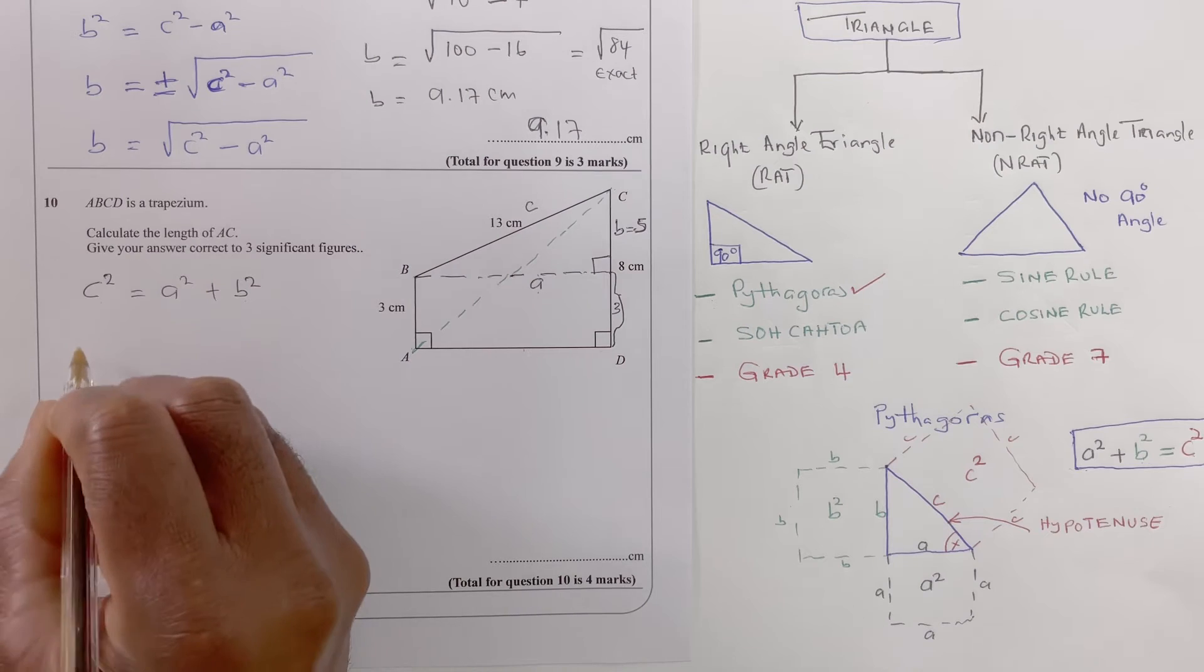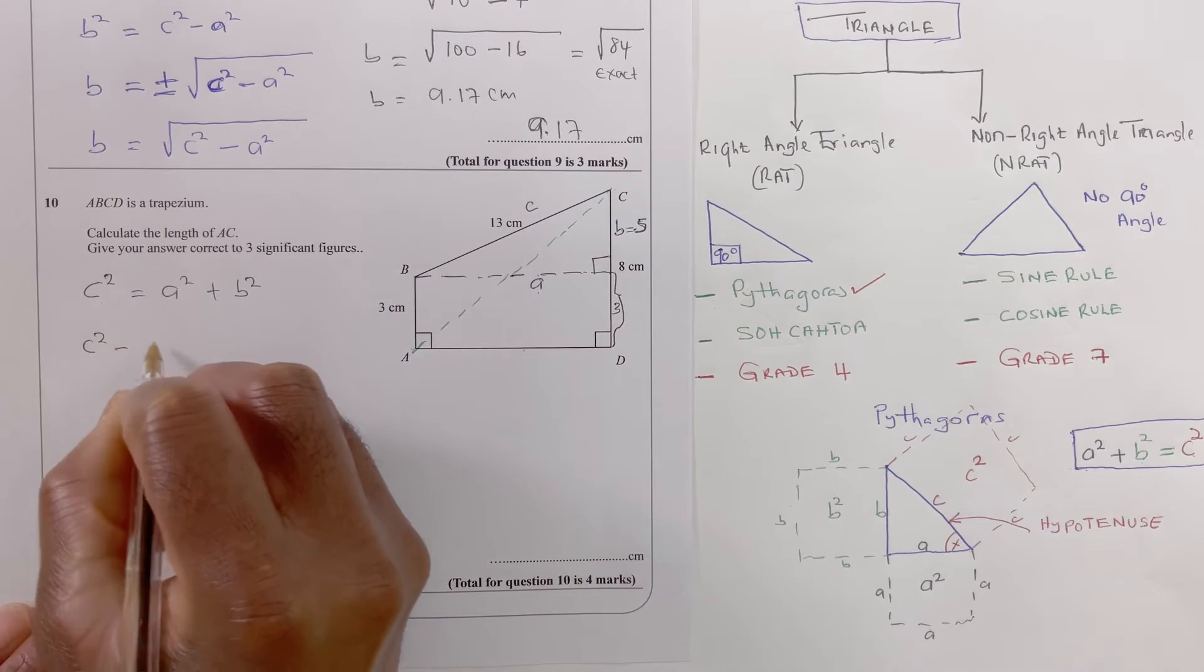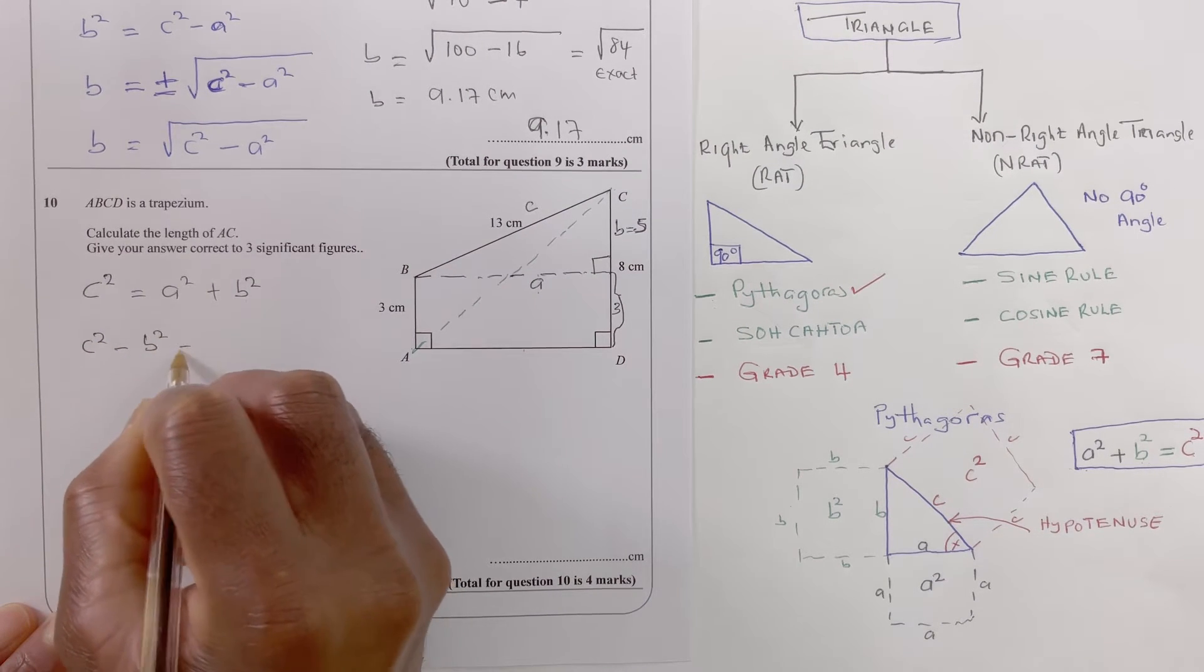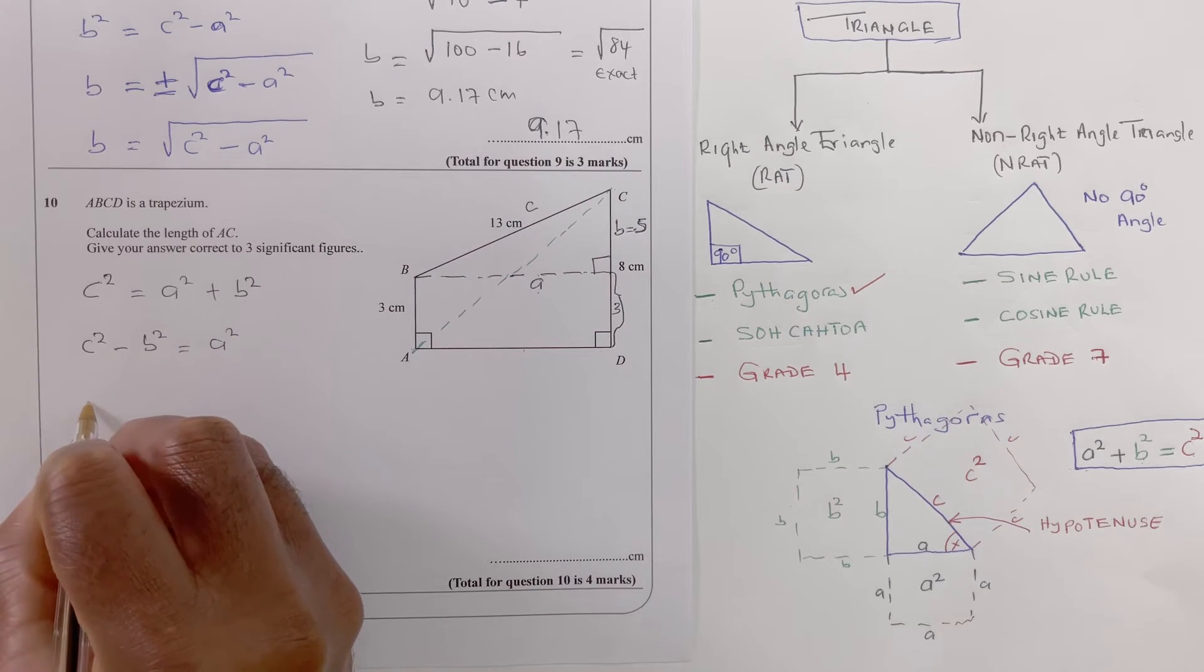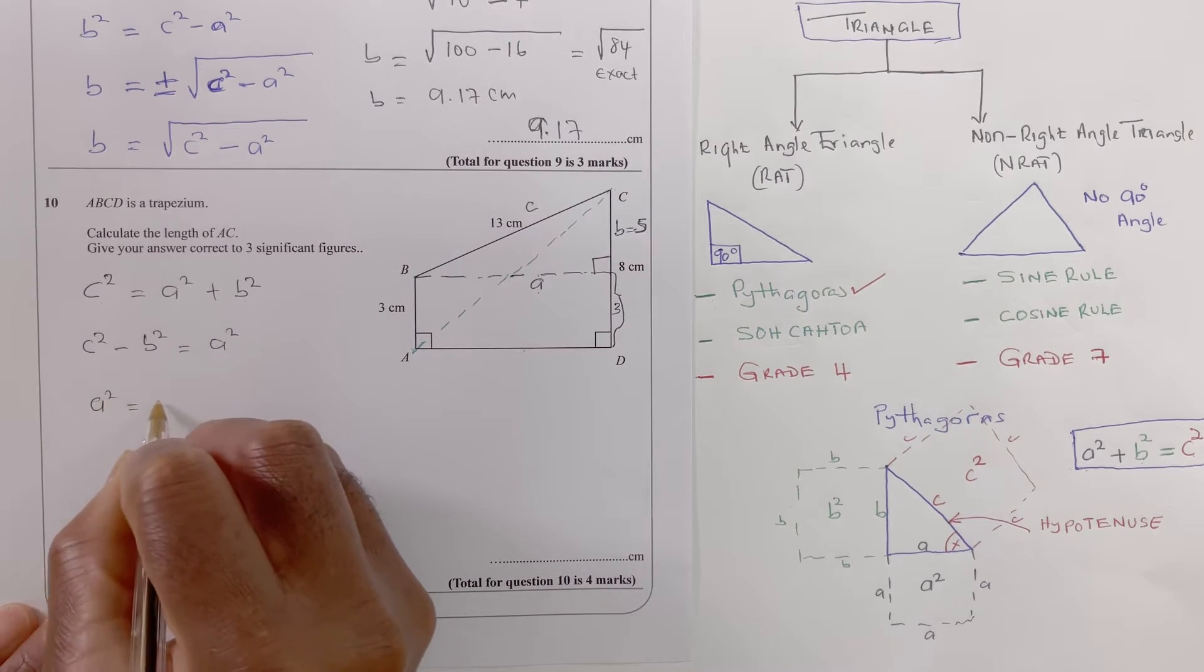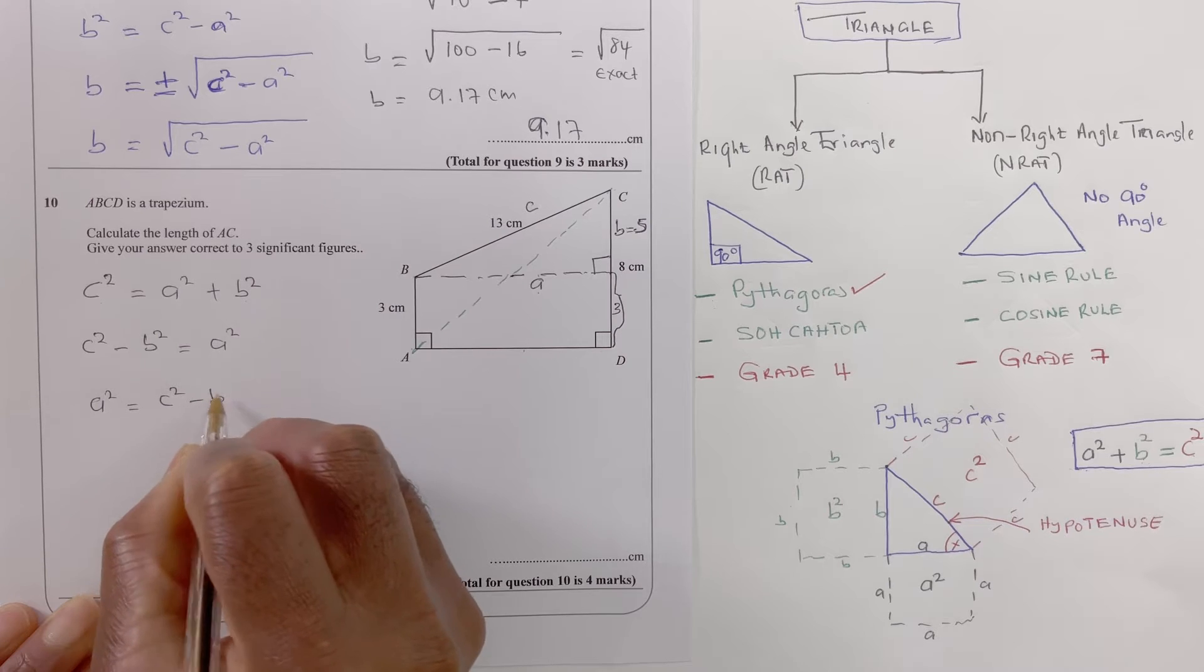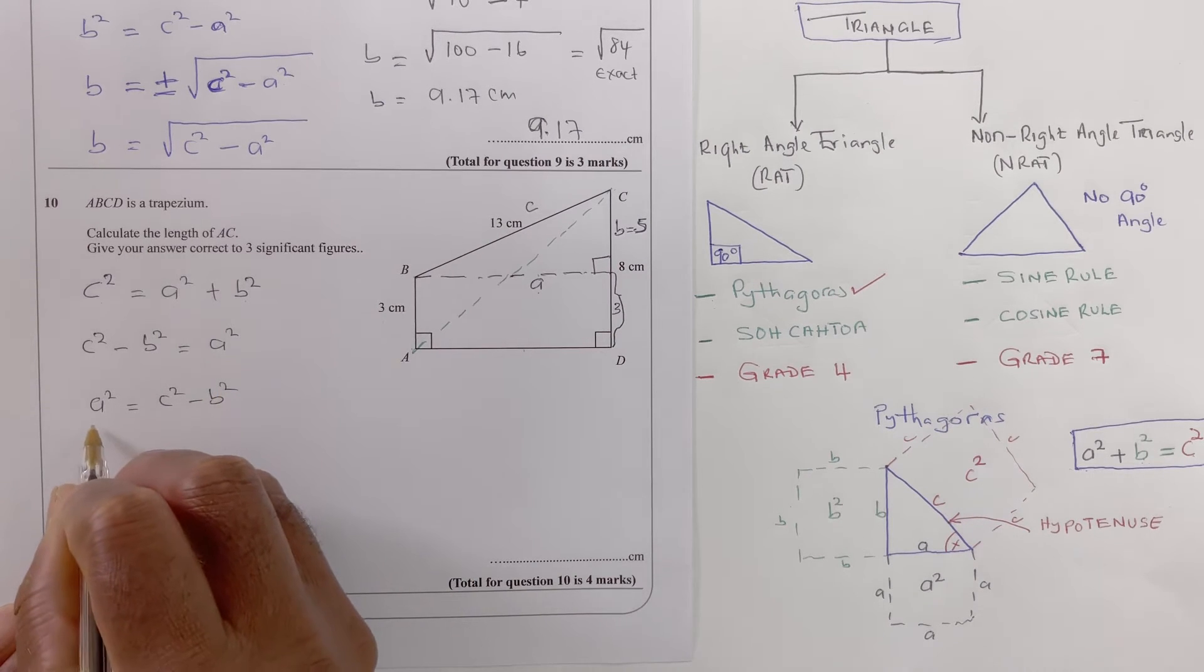c is the longest side, I know that. I'm looking for a so I need to leave that there and move that to the other side. So that would be c squared minus b squared equals a squared. Let's write that properly, so that would be a squared equals c squared minus b squared.